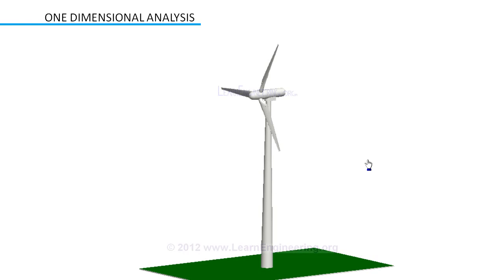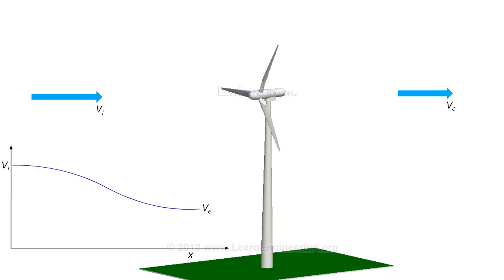Since the turbine is extracting some energy, at outlet wind will have lesser kinetic energy compared to inlet. So at exit, wind velocity will be lower compared to inlet. It will follow a trend like this from inlet to exit.